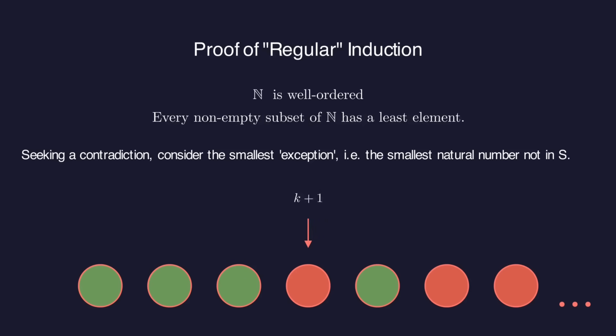Let's call the smallest exception k. Actually let's call it k plus one and we know the natural numbers one up to k are all in s. Then by the induction hypothesis k plus one must also be in s, which is a contradiction.